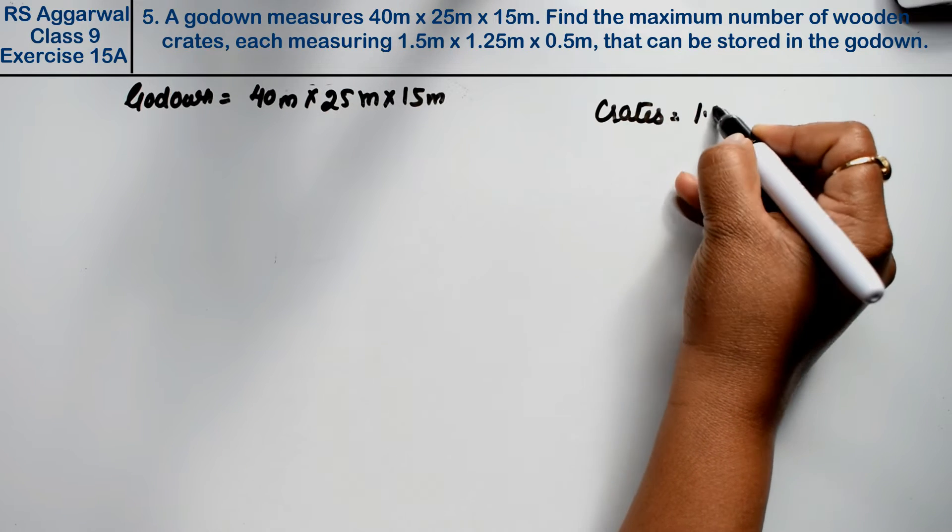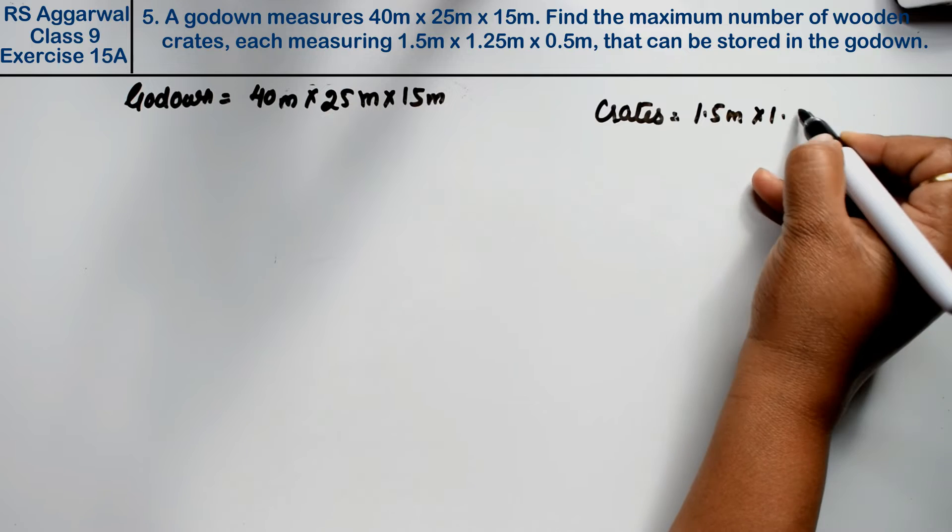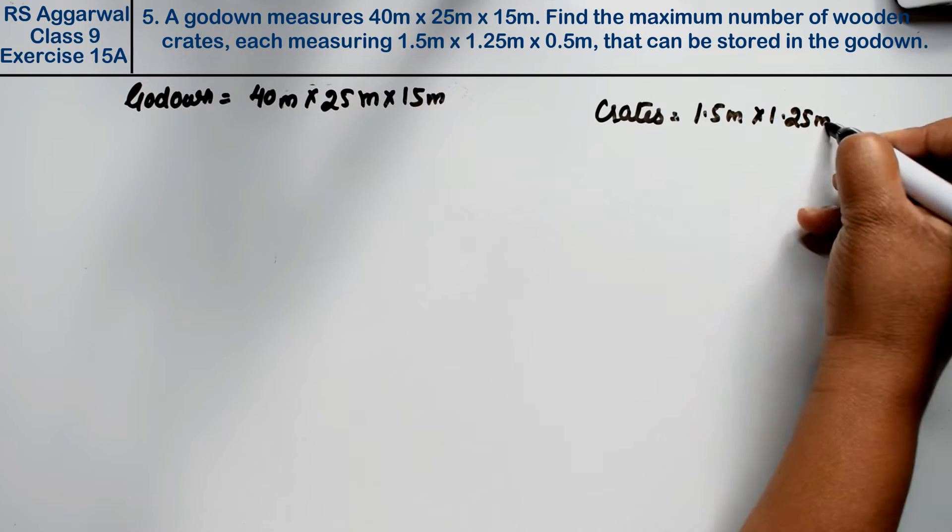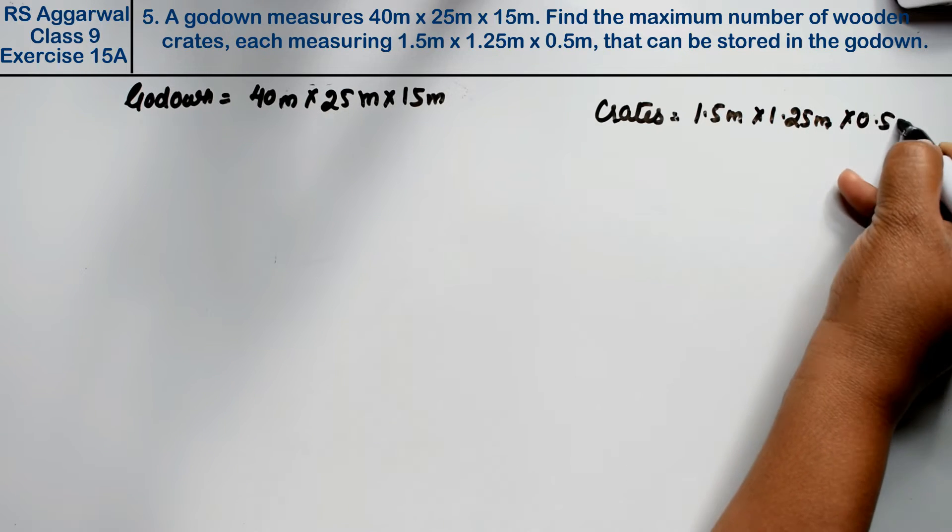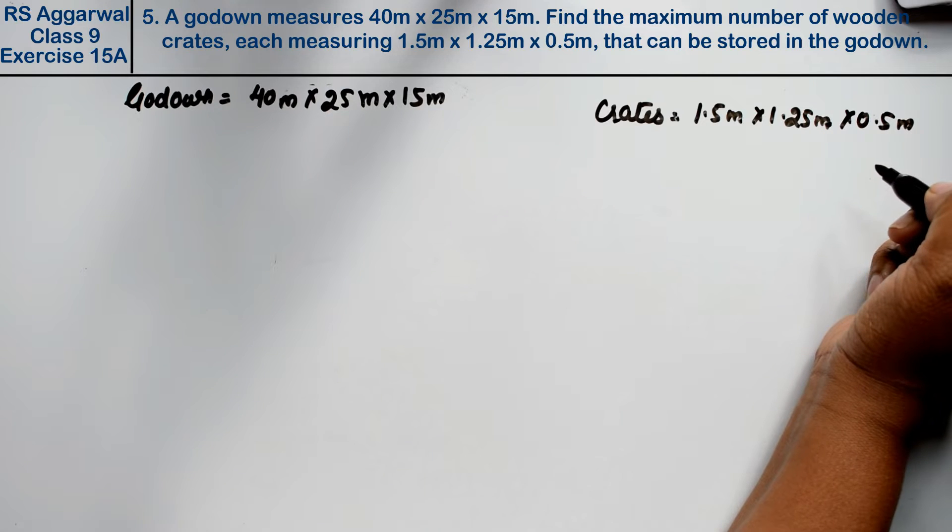1.5m × 1.25m × 0.5m that can be stored in the godown.